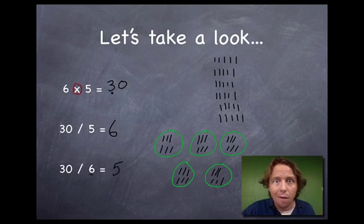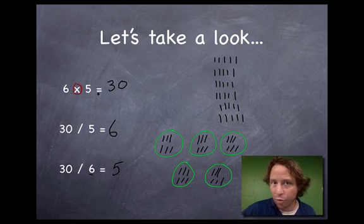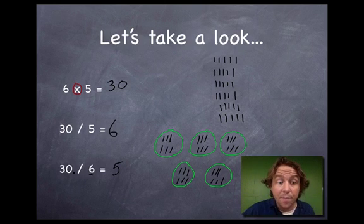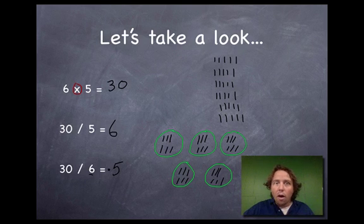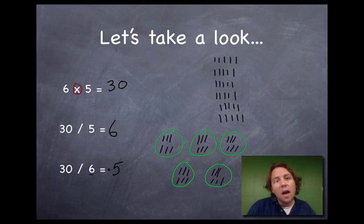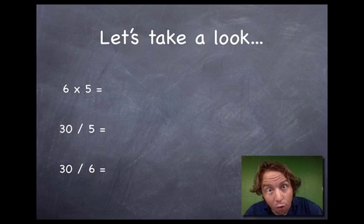You learned one multiplication problem — 6 times 5 is 30 — which also gives you another multiplication fact, because 5 times 6 is 30 (forward and backwards, they're the same). And look — you also learned two division problems: 30 cut into five groups is 6, and 30 cut into six groups is 5. Your multiplication study time is twice as valuable now!